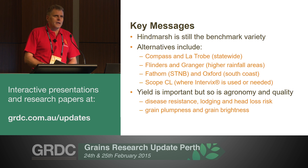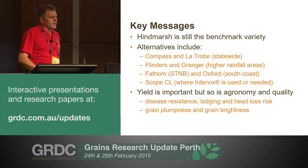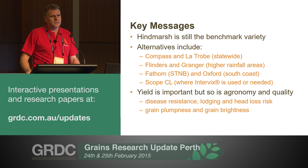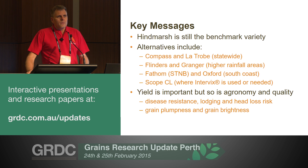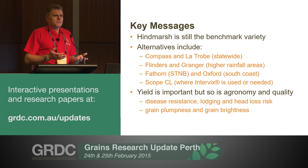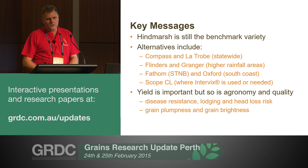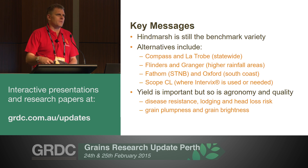Basically the alternatives are Compass and Latrobe as statewide options, Flinders and Granger in the higher rainfall areas, Fathom where you've got spot type net blotch, Oxford on the south coast, and Scope where you're using Intervix. But yield is only one of the components of profit. Particularly for barley varieties, you need to know the other traits they have — their disease resistance, lodging head loss risk, and grain quality parameters — because those are the things that ultimately decide whether you keep or throw out a variety.